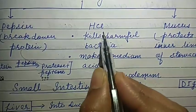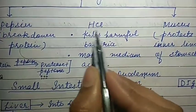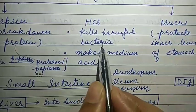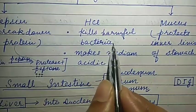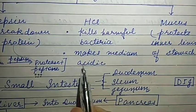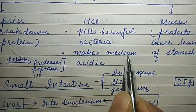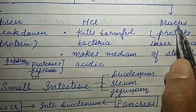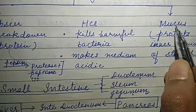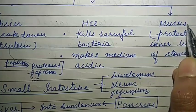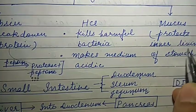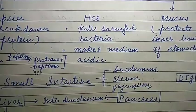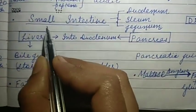Hydrochloric acid serves two roles: first, it kills harmful bacteria that come along with food; second, it provides an acidic medium to the food. Mucus is a slimy substance that protects the inner lining of the stomach.